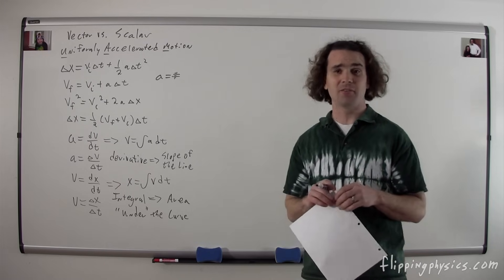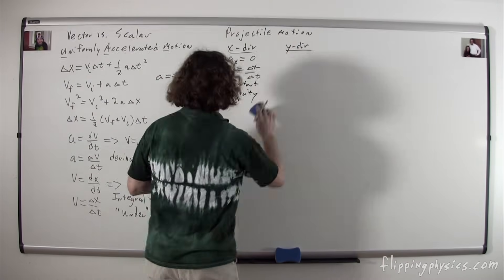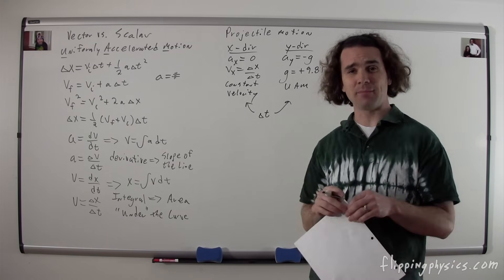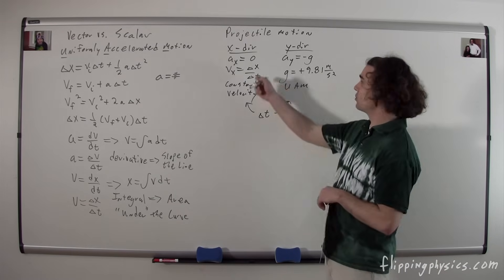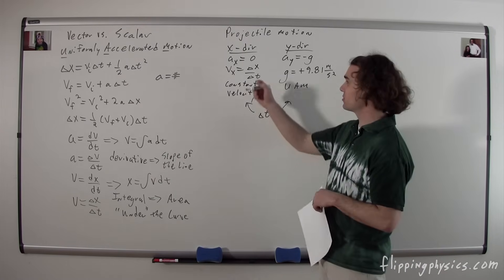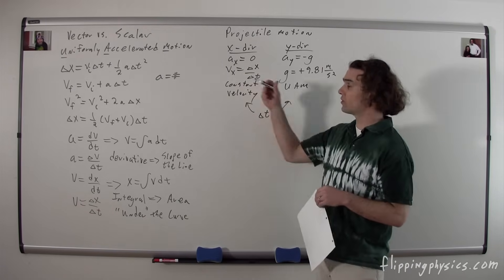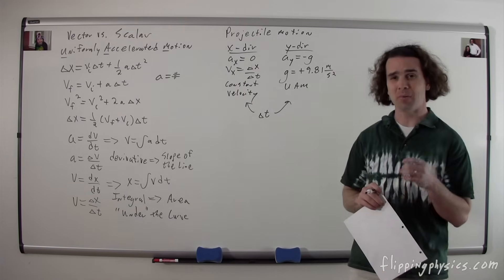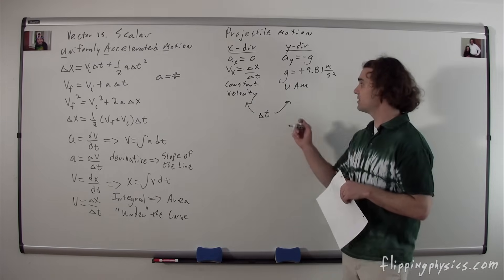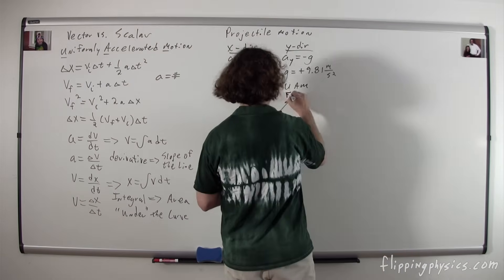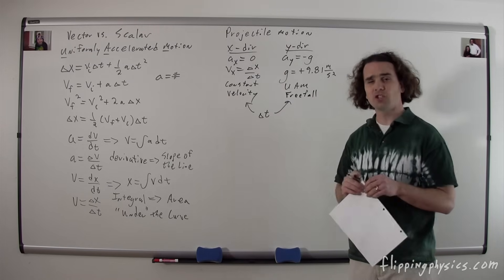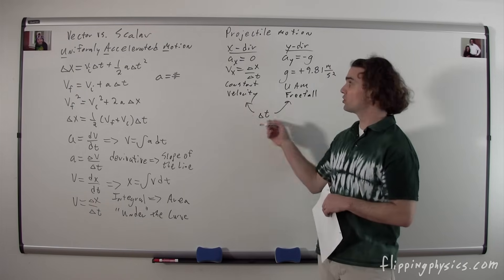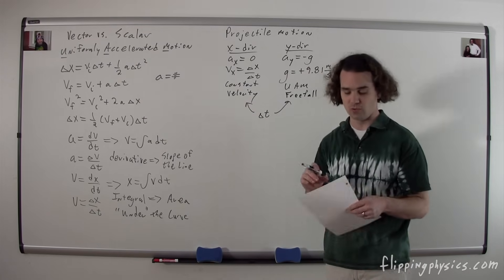Next, let's talk about the basic concept of projectile motion. Projectile motion is when you have an object flying through the air in two dimensions. In the x-direction there are no forces, so the net force equals zero, therefore the acceleration equals zero, and you have constant velocity. In the y-direction, the acceleration equals negative g, where g on planet Earth is positive 9.81 meters per second squared — this is uniformly accelerated motion, actually called free fall. The change in time is a scalar and is therefore independent of direction, so you solve for it in one direction and apply it to the other.